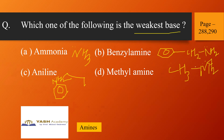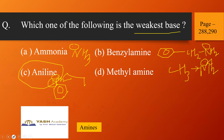In methyl amine, the CH3 group is electron-donating, so the lone pair is easily available. In benzyl amine, the NH2 group is attached to an SP3 hybridized carbon, so the lone pair is easily available for protonation. In ammonia, the hydrogens are neither electron-withdrawing nor donating, so the lone pair is also easily available. But in aniline, the lone pair on nitrogen is given to the benzene ring — it is a delocalized electron and not available for protonation. So the correct answer is aniline, which is the weakest base.